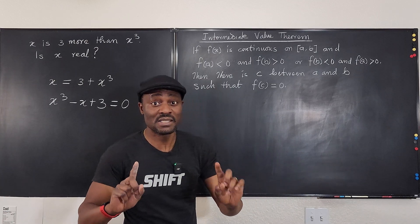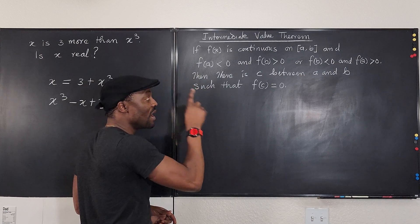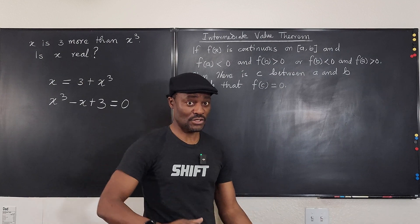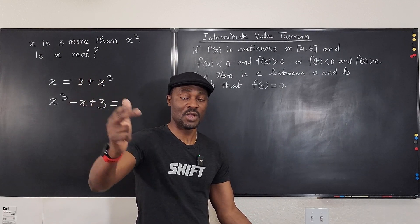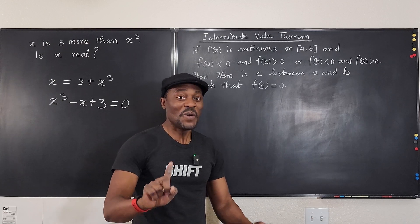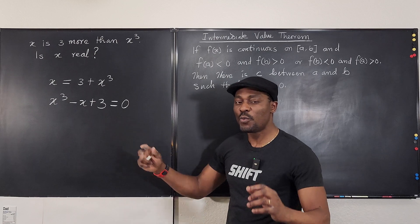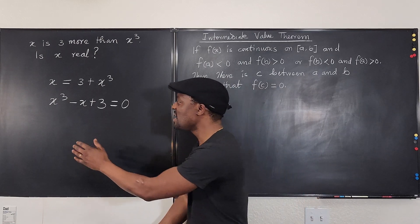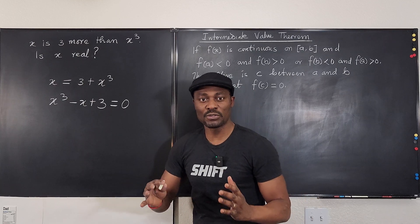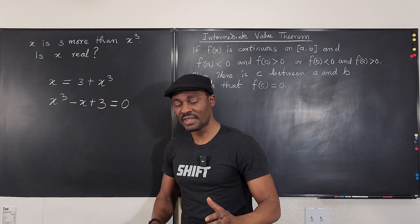And the other side gives you a positive number, or it's flipped where the other side gives you a negative and this side gives you a positive. As long as you have a negative and a positive, the theorem clearly says because the function is continuous, you must have a point between a and b where the function is zero. Because you can't just jump from negative to positive without going through zero. You see that? So that's the point here.